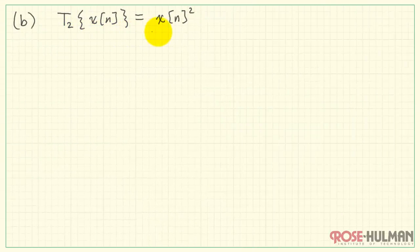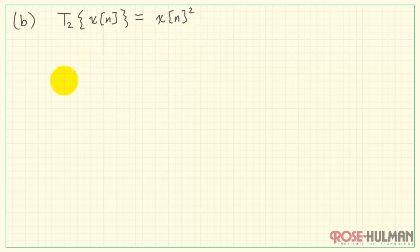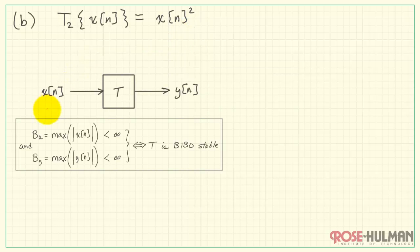Our next system is T2, and this is X of n squared. As before, let's go ahead and apply BX, our bound for all n, to that system.